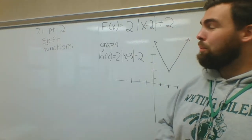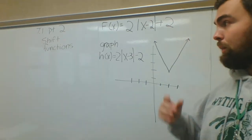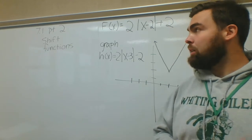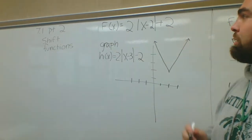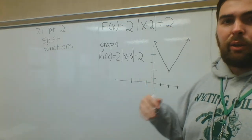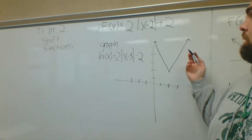This is 7.1 part 2, shift functions. I should be using what we learned in part 1. Now I have an example here: f(x) equals 2 times absolute value x minus 2 plus 2.